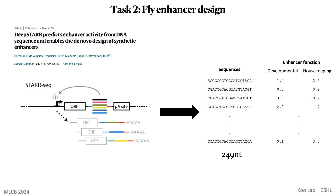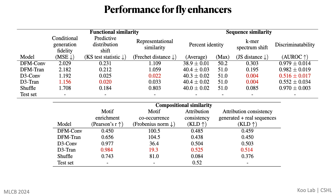Next, we benchmarked the diffusion models using a fly enhancer dataset, which is based on the StarSeq assay from the Stark lab. It consists of 249 nucleotide long sequences, each associated with two scalar enhancer activity values, corresponding to a developmental promoter and a housekeeping promoter. We trained both our D3 model and the Dirichlet flow matching, in short DFM, model using the same two base architectures: CNN and transformer. In our approach we simultaneously conditioned the models on both activity values. Our evaluation on the fly enhancer dataset yielded consistent results with our previous findings. D3 generated sequences exhibited higher efficacy in their function, the same composition as natural sequences, and even a downstream discriminative model could not tell them apart, as indicated by an AUROC close to 0.5 in the discriminatability test.